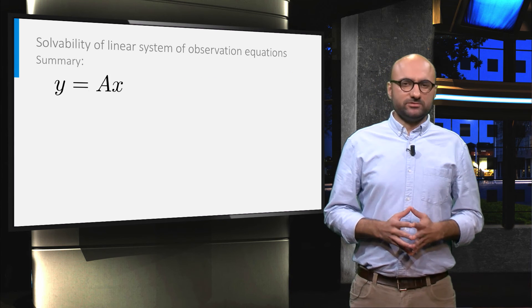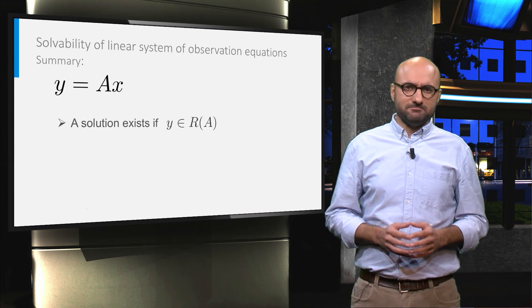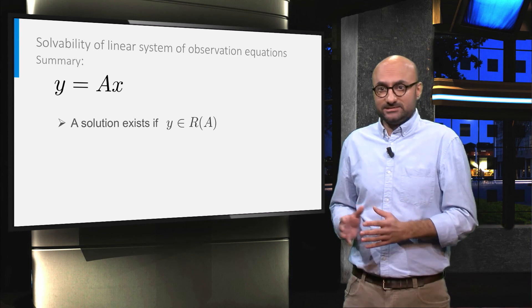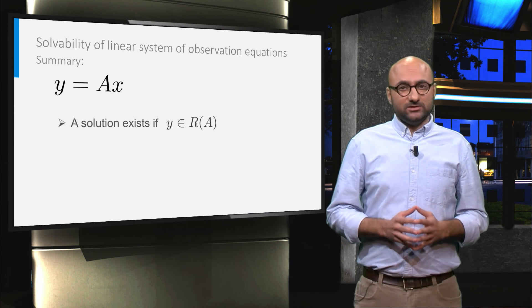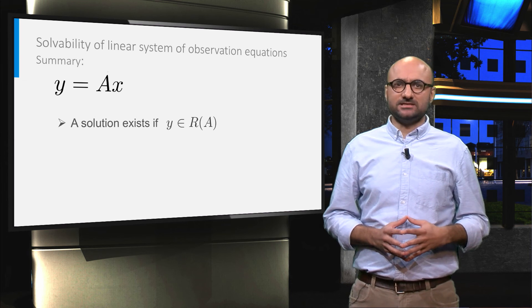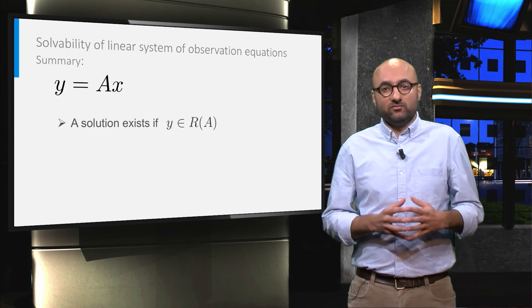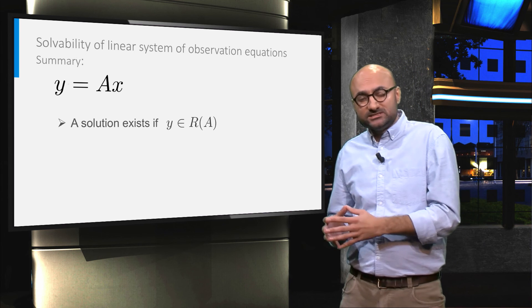In summary, in this video we learn that a solution to the system y equals Ax exists if and only if the vector of observation can be written as a linear combination of the columns of A, or when we can say y is a member of the range space of A.